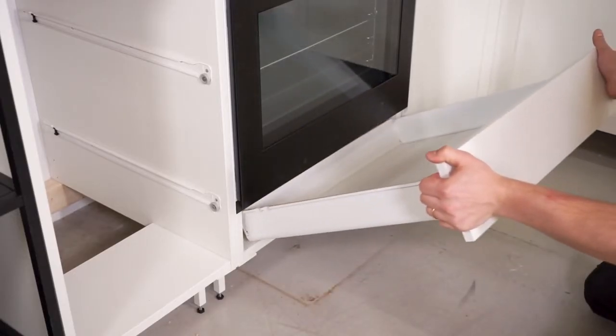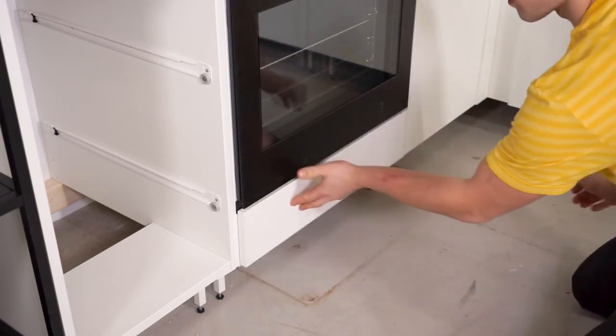Slide the drawer into the cabinet by aligning the back wheels of the runner with the front wheels of the sliders.